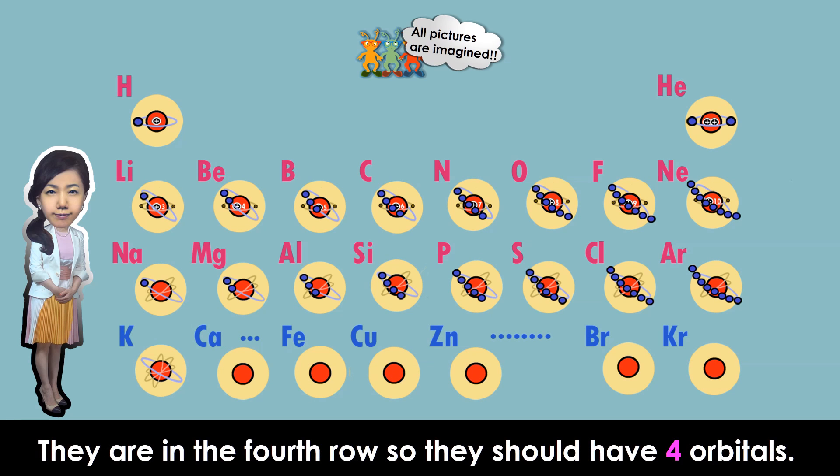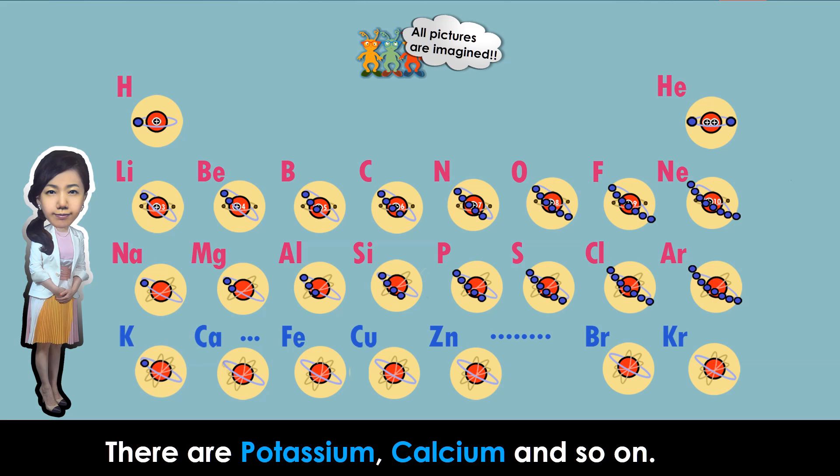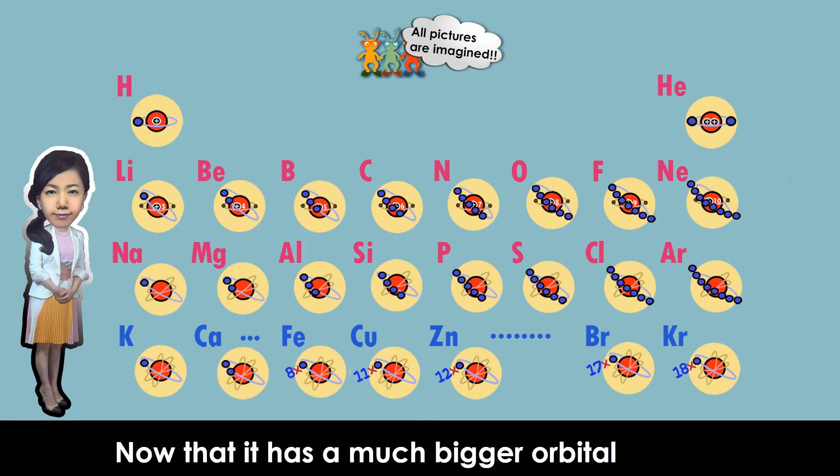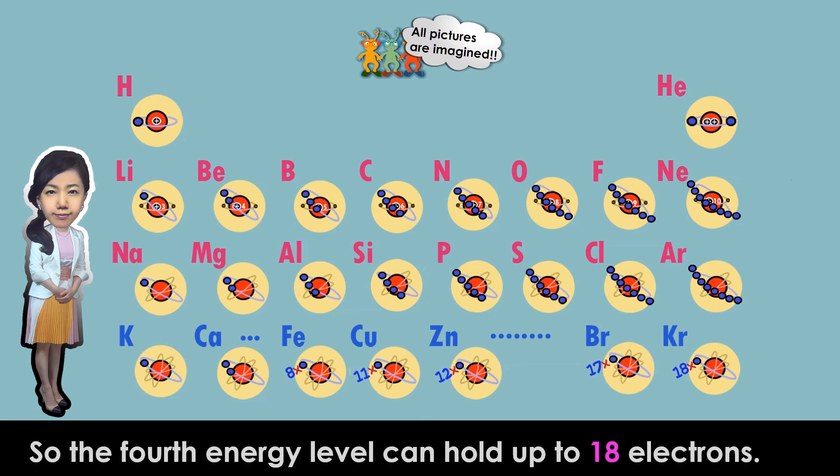They are in the fourth row, so they should have four orbitals. There are potassium, calcium, and so on. Krypton at the end of the row has 18 electrons. Now that it has a much bigger orbital, there's room for many electrons. So the fourth energy level can hold up to 18 electrons.